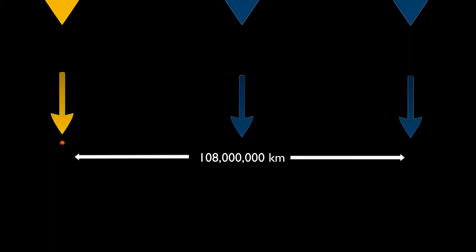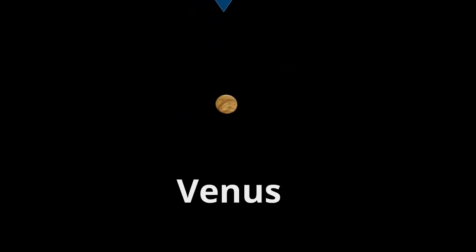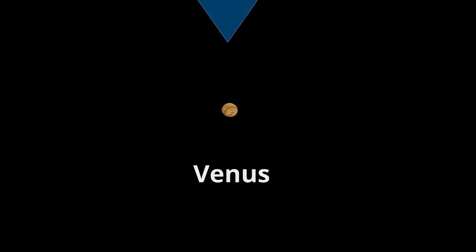Zooming back out, the next planet out is Venus. Venus is about 108 million kilometers distant — that's 70 million miles — which is about twice the distance as Mercury. A closer look gives us the sense that these planets are mere specks compared to the amount of space right within our solar system.